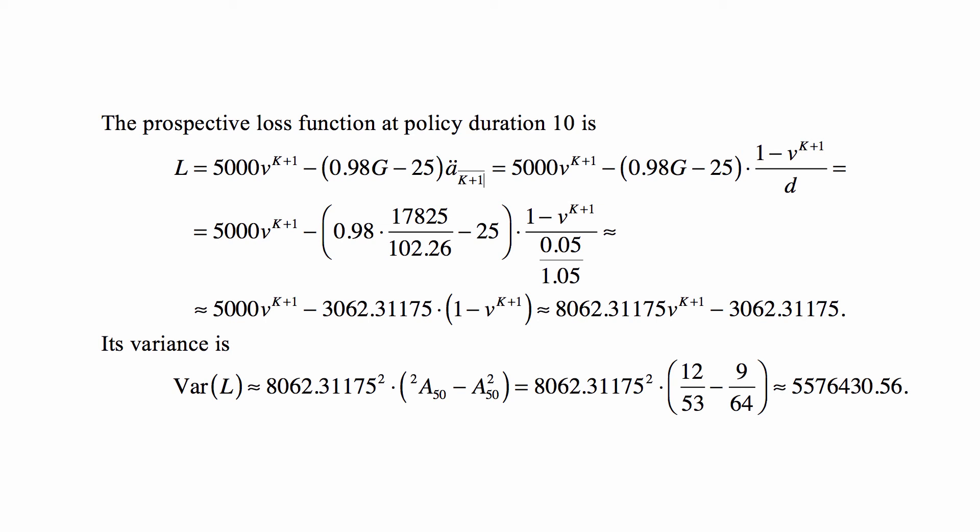We are looking at the variance of this. The constant term has zero variance, so it's irrelevant. The variance is simply the square of the coefficient in front of v^(K+1) times the variance of that term, which is the variance of life insurance at age 50. That's ²A₅₀ - A₅₀².